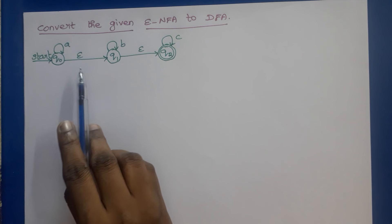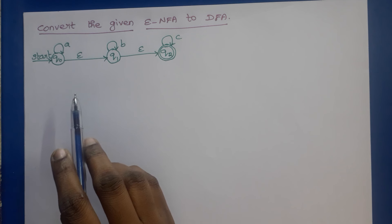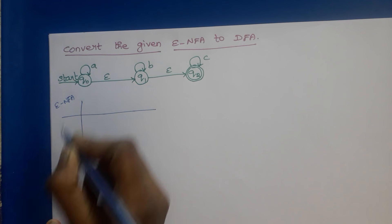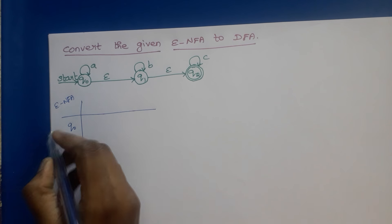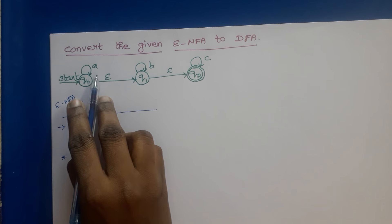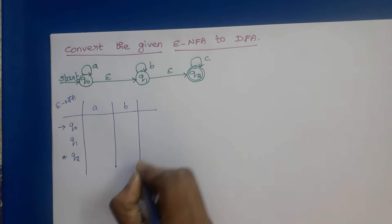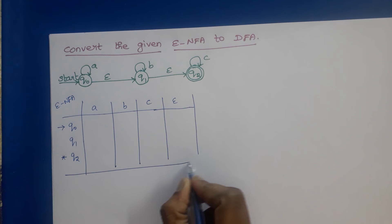We have to convert this given epsilon NFA into DFA. First we have to construct the epsilon NFA transition table. This is the transition table for the epsilon NFA. Rows correspond to the states Q0, Q1, and Q2. The start state is Q0 and the final state is Q2. The input symbols are A, B, C. We also include epsilon because epsilon NFA has epsilon transitions, so there are four columns: A, B, C, and epsilon.